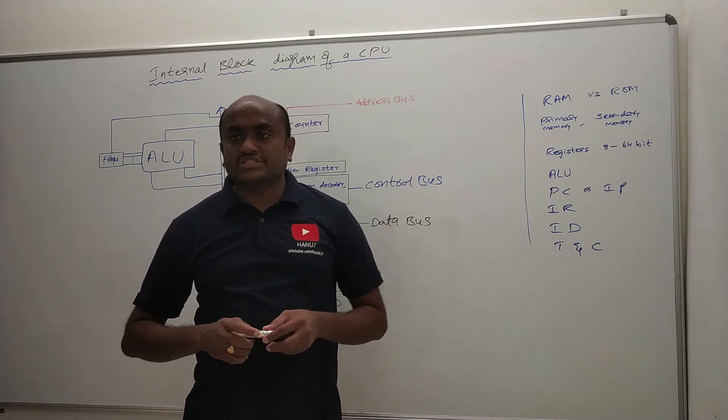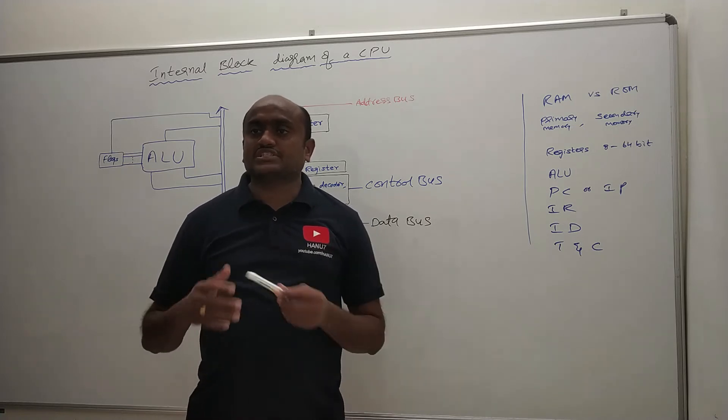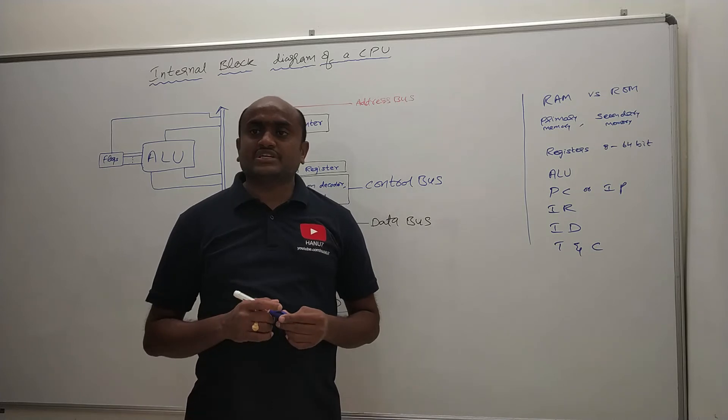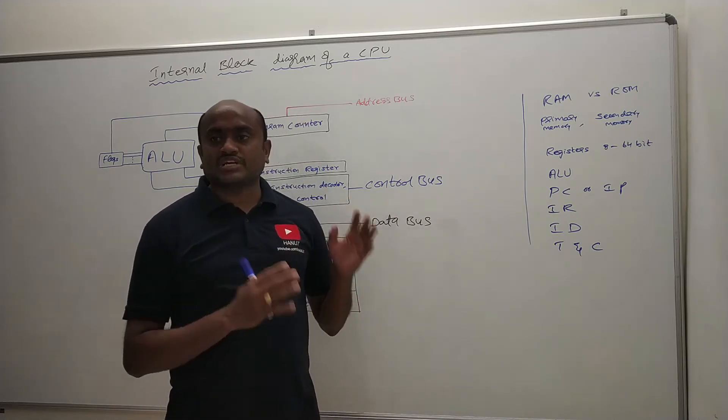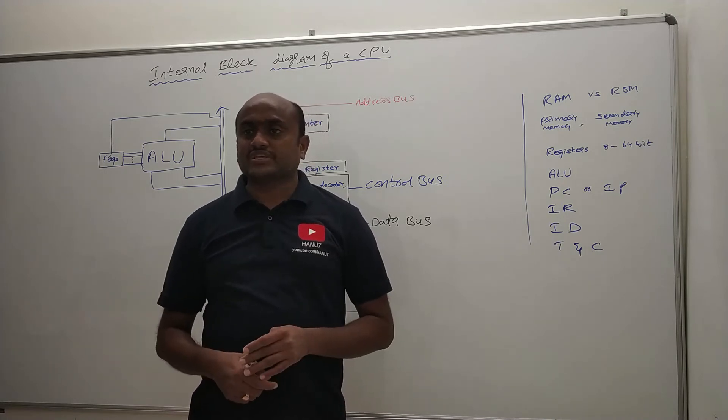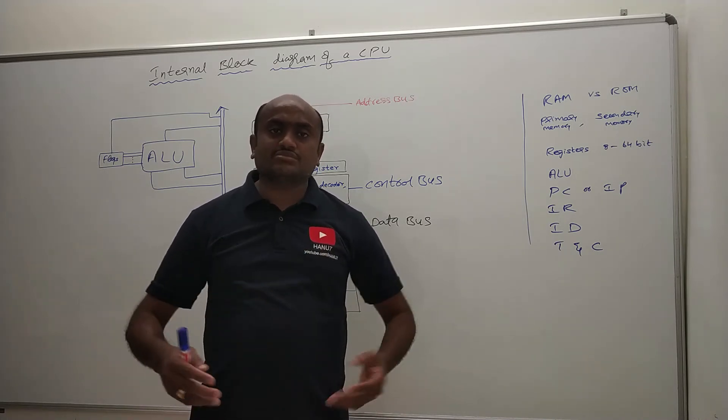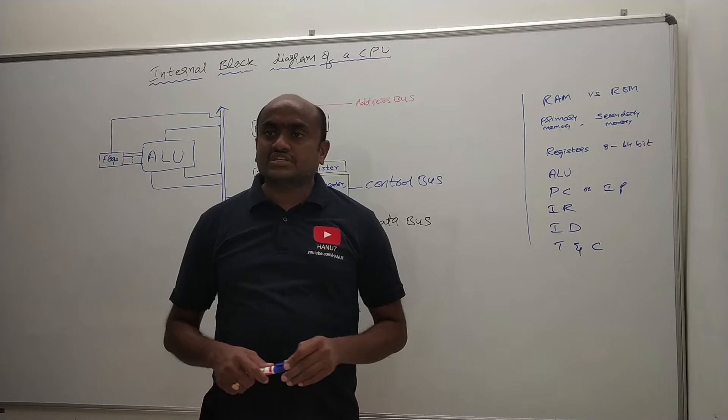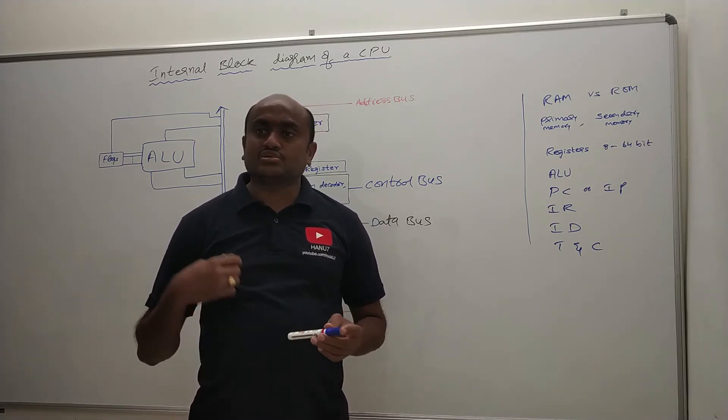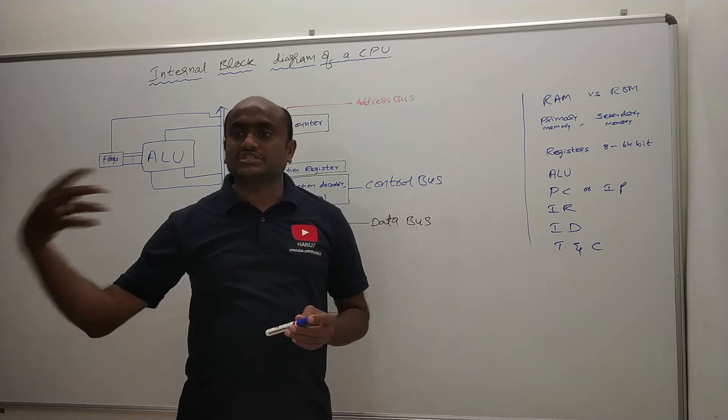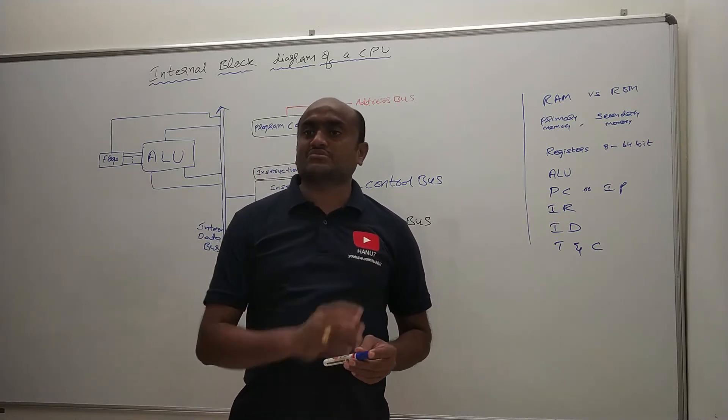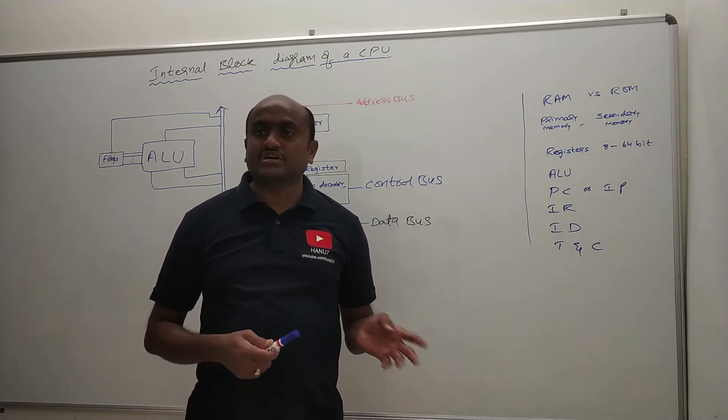So whatever information CPU wants to execute or use, it should be available in primary memories first so that it can access quickly. If it is not available in primary memories, then it will go to the secondary memories, that is directly it will go to the disk memory. And from the disk memory it will copy that information into the primary memories like RAM and ROM.